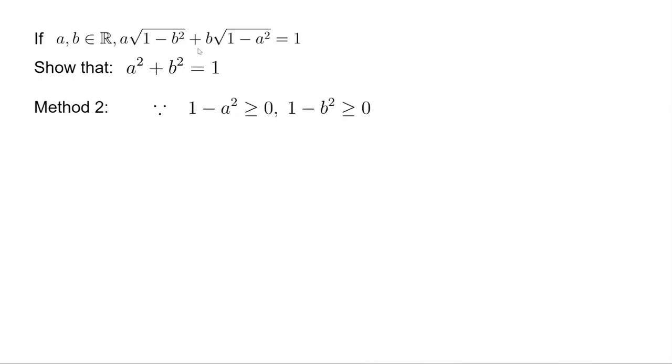Because the square root of 1 minus a squared and square root of 1 minus b squared must be greater than or equal to 0, this means 1 minus a squared is greater than or equal to 0, and 1 minus b squared is greater than or equal to 0. Which means a and b are between minus 1 and plus 1.